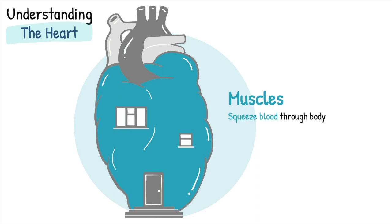These muscles form the outer walls of the house and have room inside to contain the blood. Similar to other muscles in our body, the heart muscles can also grow and thicken in response to stress, or can weaken from disease processes, resulting in heart failure.